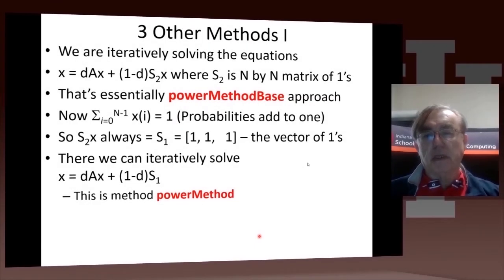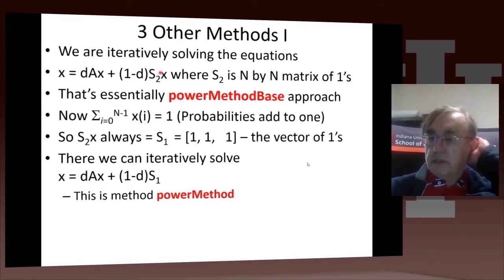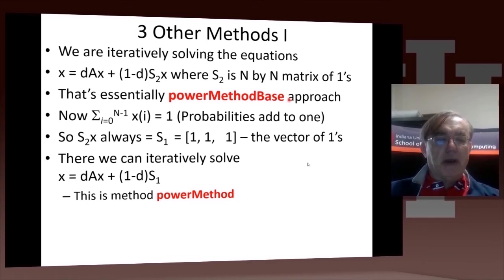There are three other methods given on this website, and are listed in that page rank 2 file. I'll just briefly mention them. The method we just went through, called the par method base, is just taking this equation here. x equals the damping factor, d times a plus 1 minus d times the matrix of ones, and... times... s is the matrix of ones. That's the method we already went through, very simple to implement.